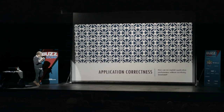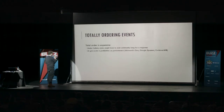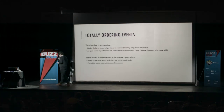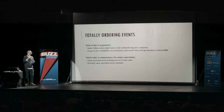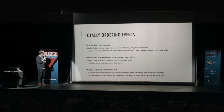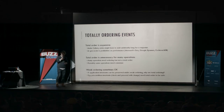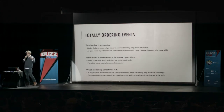It all comes down to application correctness. Totally ordering an event is expensive and hard to do under failure. The key insight is that total ordering is unnecessary for many operations — many can get by with weaker ordering, and we know provably that some operations need consensus. We can use weak ordering when we know our application will remain correct. Certain types of application invariants, such as precondition invariants, require consensus or a total order.